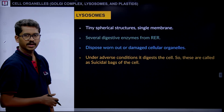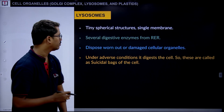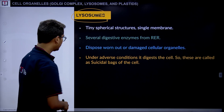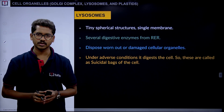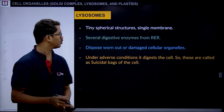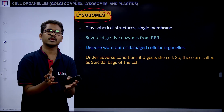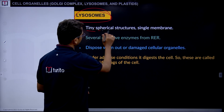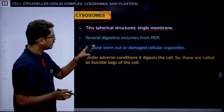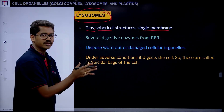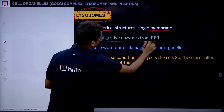Among the many secretory vesicles released by the Golgi complex, some of them become lysosomes. Lysosomes are quite tiny spherical structures with a single membrane. They contain several types of digestive enzymes made from the RER. It is observed that around 2,500 different types of digestive hydrolytic enzymes are present in lysosomes across different organisms. Lysosomes also maintain their internal pH at a very low level, making them acidic.